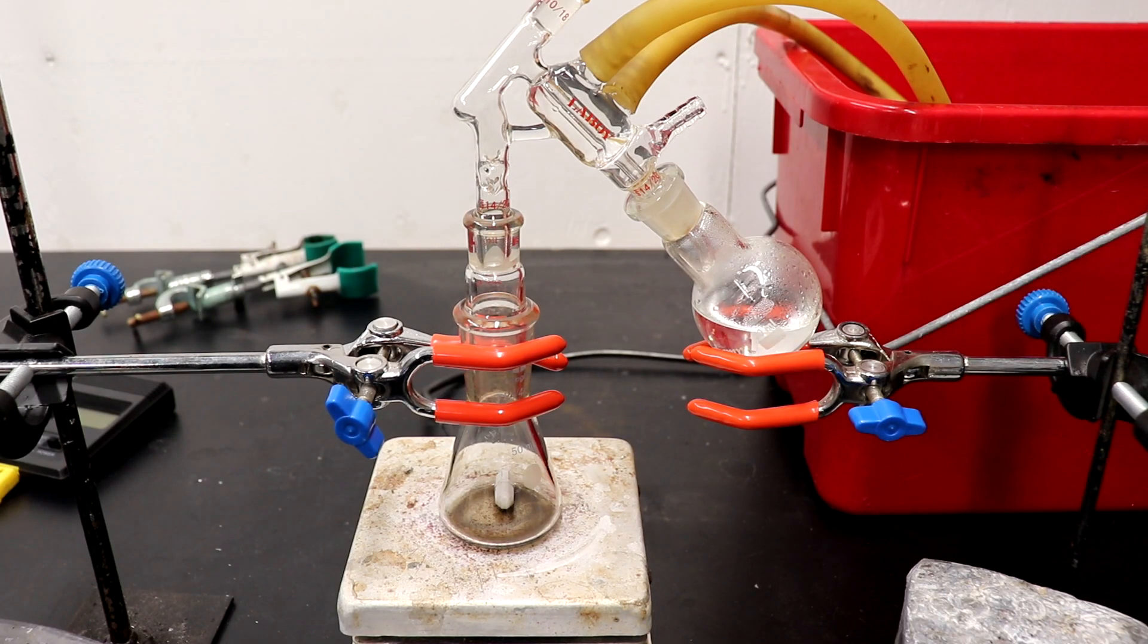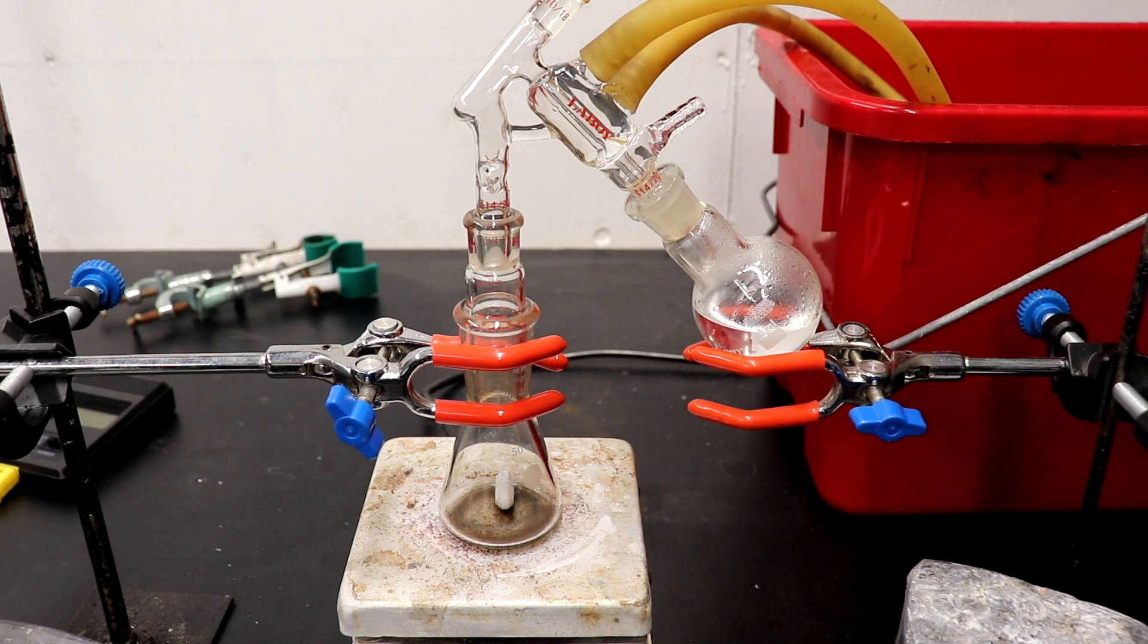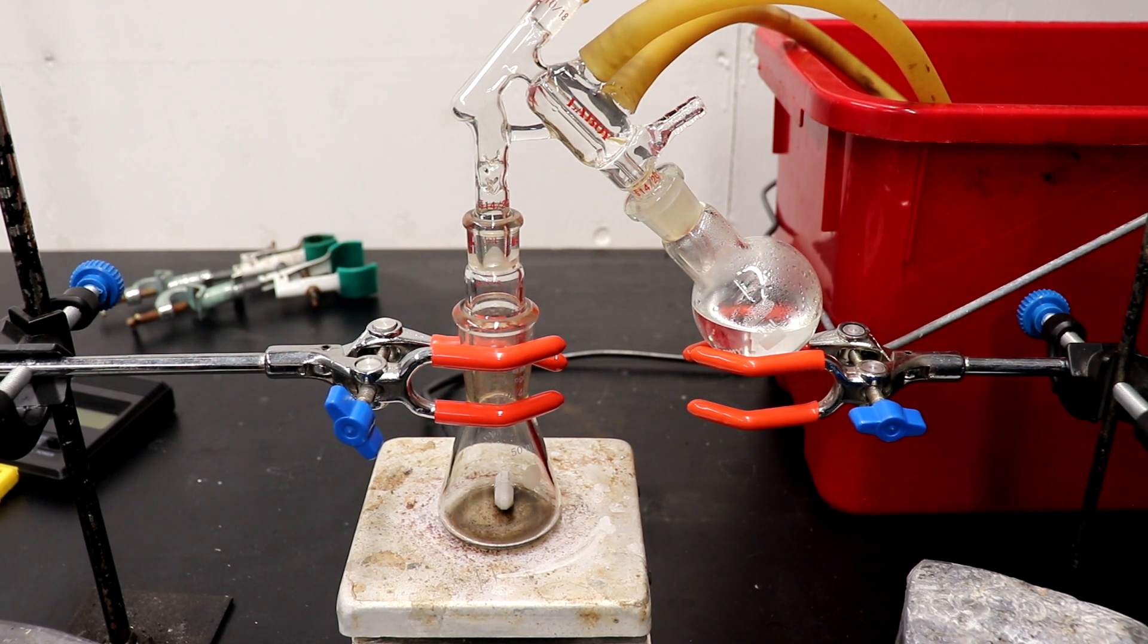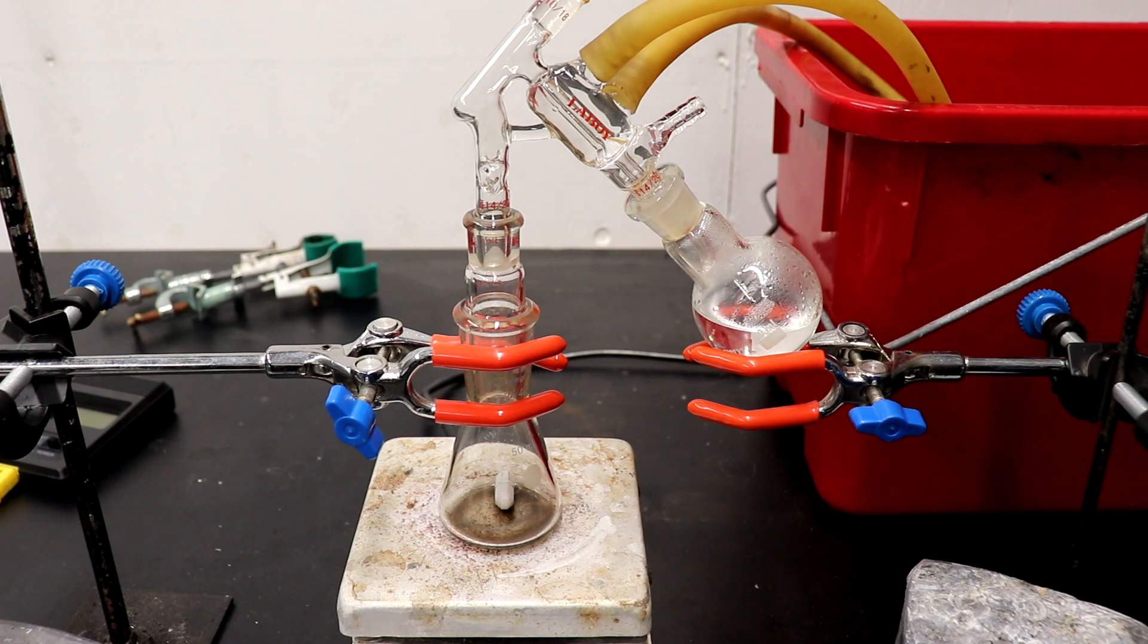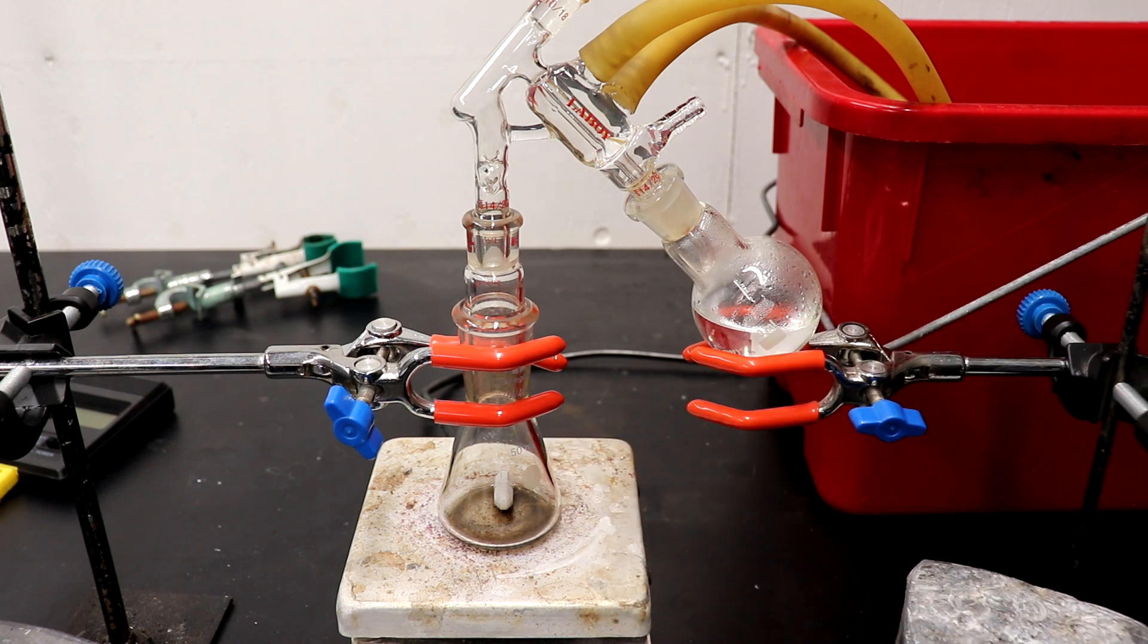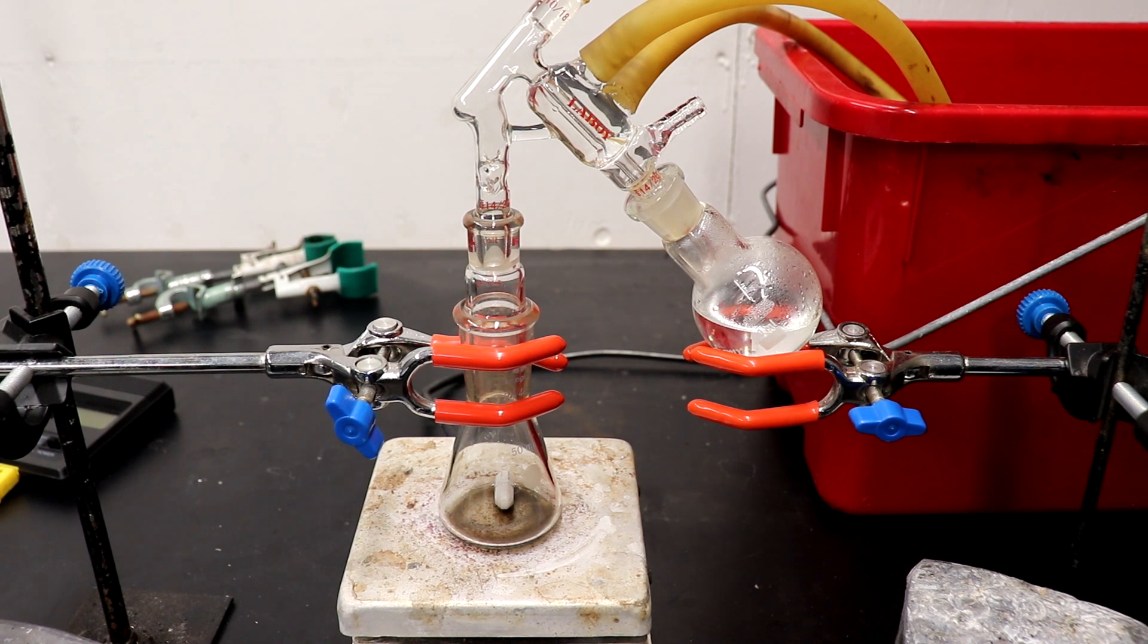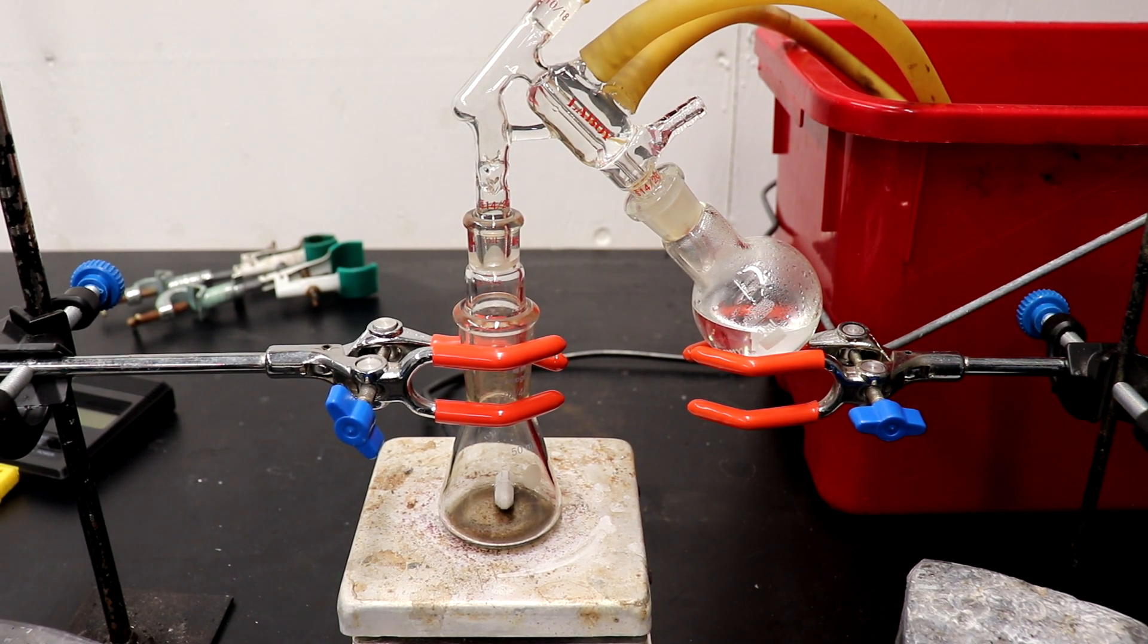The distillation is finished. I've collected most of the 1,4-dibromobutane. There is a tiny amount of forerun, really not much to be mentioned, maybe half a ml, and there's probably about half a ml left in the distillation flask as well. Really, it was all 1,4-dibromobutane, which is great. So now I'll weigh it out, put it in a bottle, and we'll calculate the yield.